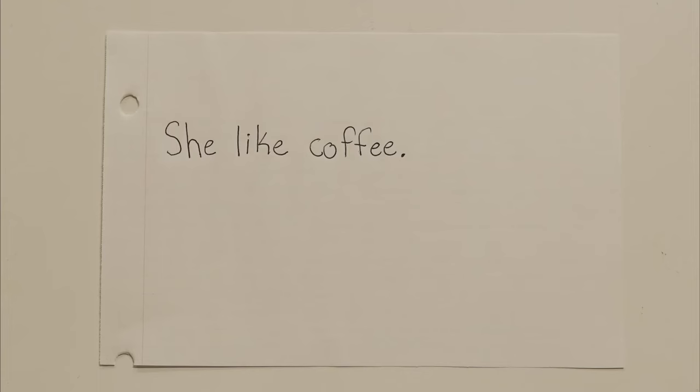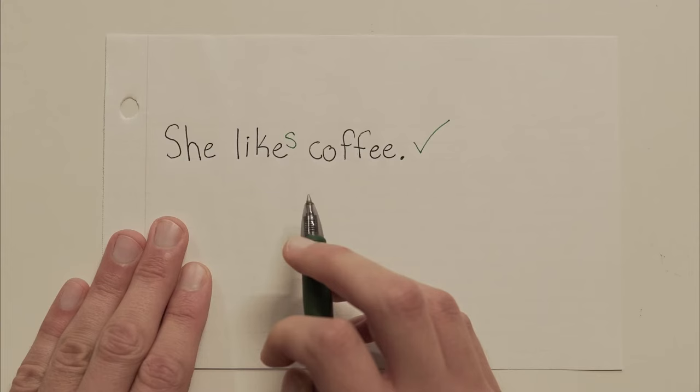So here is a sentence that does not have subject-verb agreement. She like coffee. Now, the subject of my sentence is she and the verb of my sentence is like. But there's something wrong here. Because when you only have one person, you should be saying the word likes with an s. One person likes something. So to make this sentence correct, to give this sentence proper subject-verb agreement, we would have to change like to likes. She likes coffee.